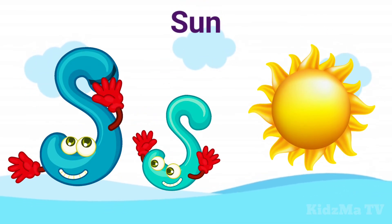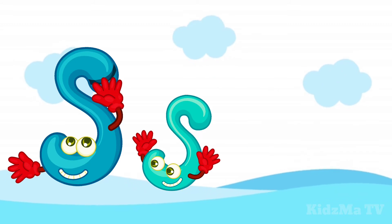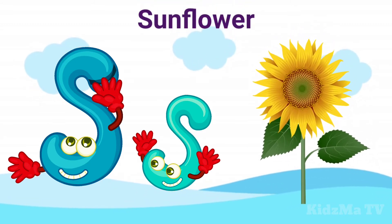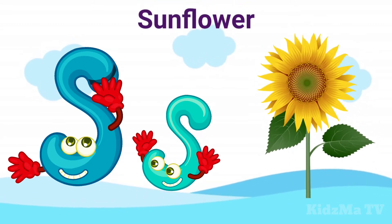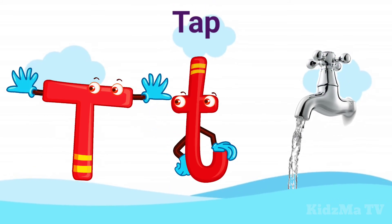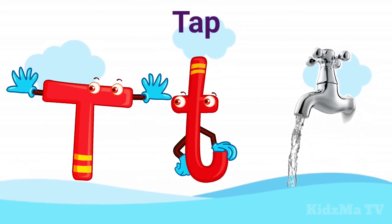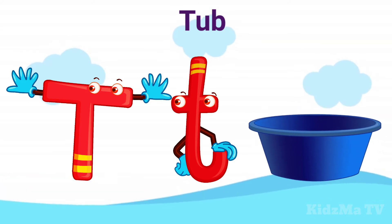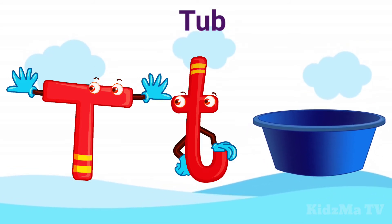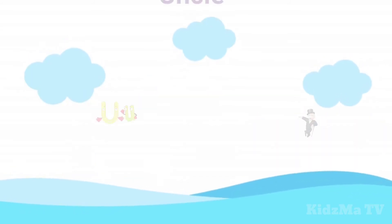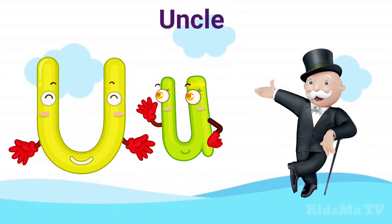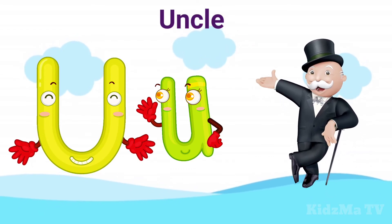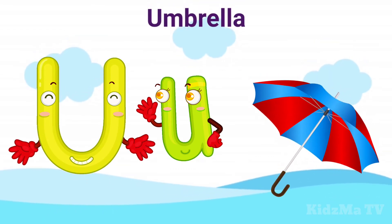S is for Sunflower. T is for Tap. T is for Tub. U is for Uncle. U is for Umbrella.